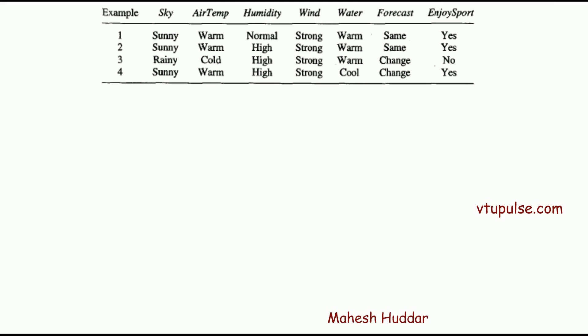This is the dataset given for us. There are four examples in this dataset and there are six attributes. The first attribute is sky, second one is air temperature, third one is humidity, fourth one is wind, fifth one is water, and sixth one is forecast. The target variable is enjoy sport. Given certain conditions, sometimes the person will enjoy the sport and sometimes he will not.